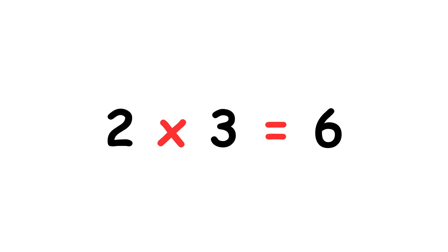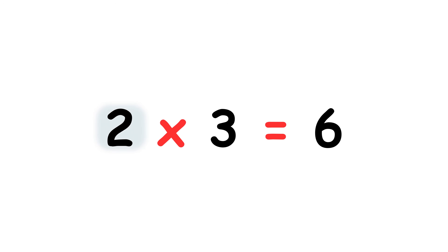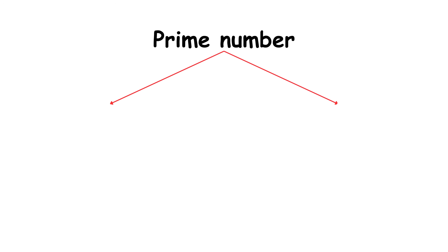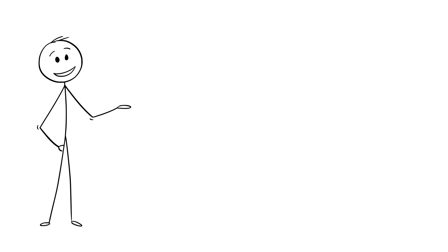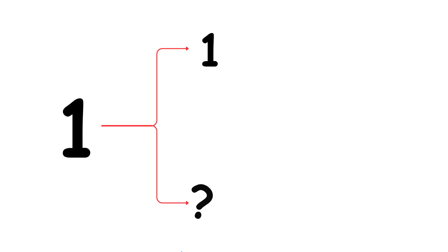Put another way, 2 times 3 equals 6. When you multiply numbers together, those numbers are called factors, so 2 can also be called a factor of 6. A prime number is a natural number that has exactly two factors. Those factors are always the number 1 and the prime number itself. An example of a prime number is 7, whose only factors are 1 and 7. Note that the number 1 is not a prime number.